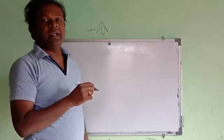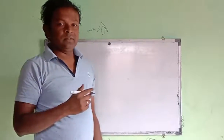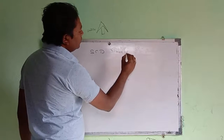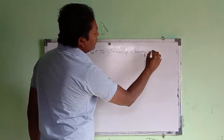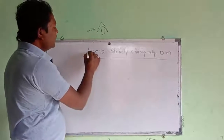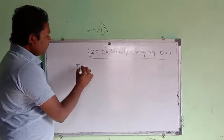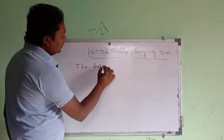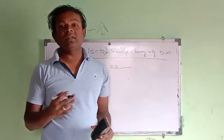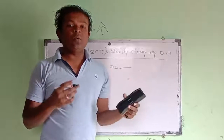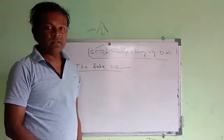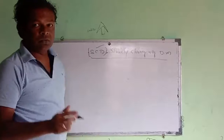Now let's look at the types of dimension tables. The first type is SCD, that is nothing but Slowly Changing Dimension. The data in the database is going to change over a certain period of time — it is time-variant. That is called a Slowly Changing Dimension.